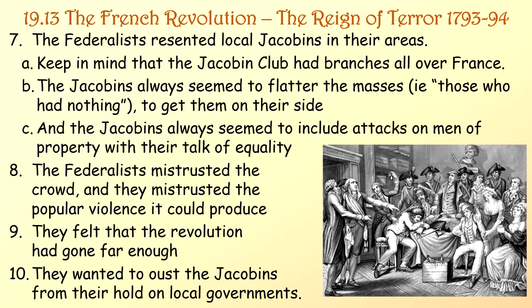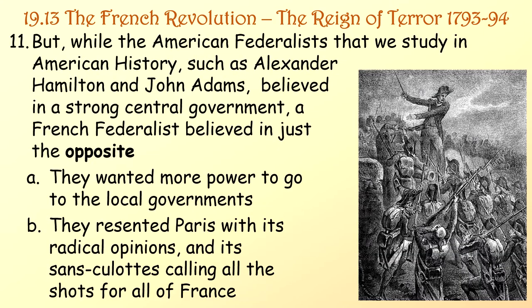The Federalists wanted to see how the Republic would benefit the middle class rather than always costing them. They resented local Jacobins who had branches all over France and always seemed to flatter the masses and include attacks on men of property. The Federalists mistrusted the crowd and popular violence, felt the Revolution had gone far enough, and wanted to oust Jacobins from local governments. Unlike American Federalists like Hamilton and Adams who believed in strong central government, French Federalists wanted more power in local governments and resented Paris with its radical sans-culottes.